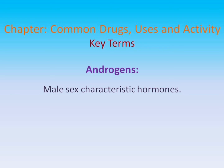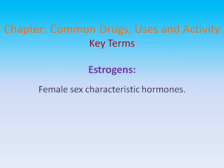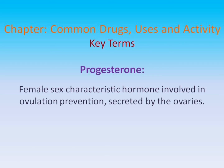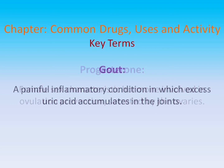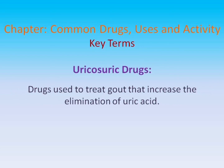Androgens: Male sex characteristic hormones. Testosterone: The primary androgen, secreted by the testes. Estrogens: Female sex characteristic hormones. Progesterone: Female sex characteristic hormone involved in ovulation prevention, secreted by the ovaries. Gout: A painful inflammatory condition in which excess uric acid accumulates in the joints. Uricosuric drugs: Drugs used to treat gout that increase the elimination of uric acid.